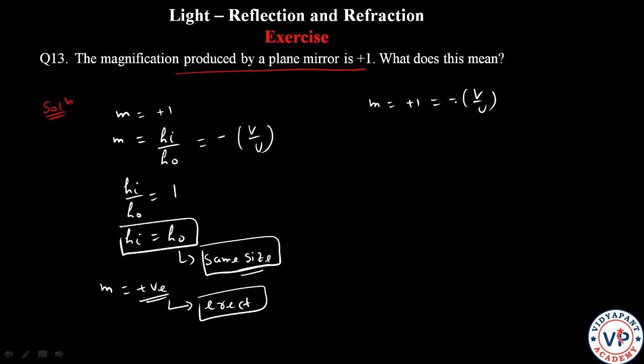v and u have opposite signs, that means u is negative and v is positive.